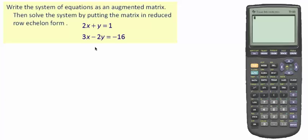All right, so we're asked to write the system of equations as an augmented matrix, then solve the system by putting the matrix in what we call the reduced row echelon form. So I think the first thing we need to do is establish what they mean by a reduced row echelon form.